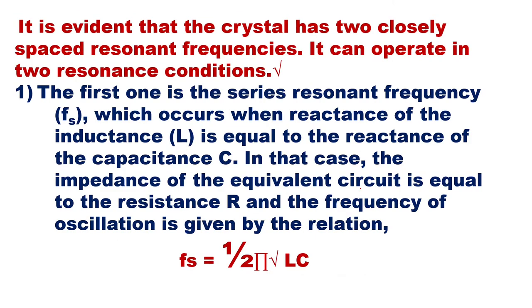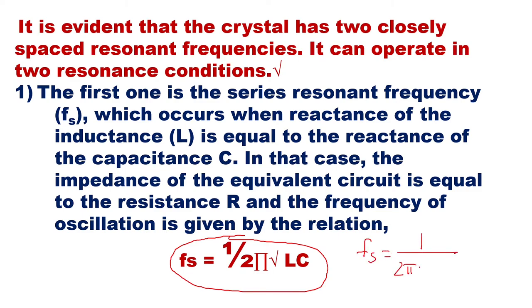The crystal has two closely spaced resonant frequencies and can operate in two resonance conditions. The first is the series resonance frequency Fs, which occurs when the reactance of inductance L equals the reactance of capacitance C. In that case the impedance of the equivalent circuit equals resistance R, and the frequency of oscillation is given by: Fs = 1 / (2π√LC).